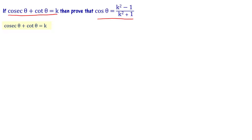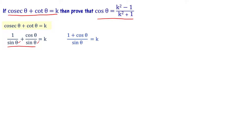We write cosec theta as 1 by sin theta and cot theta as cos theta by sin theta. So 1 by sin theta plus cos theta by sin theta equals k. Since the denominator is sin theta, we get 1 plus cos theta divided by sin theta equals k. By cross multiplication: 1 plus cos theta equals k times sin theta.